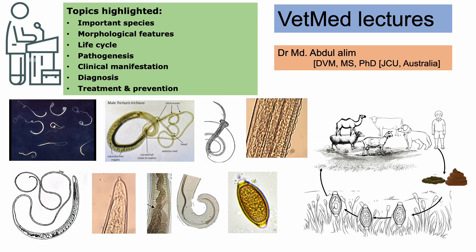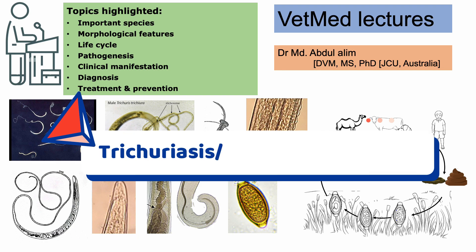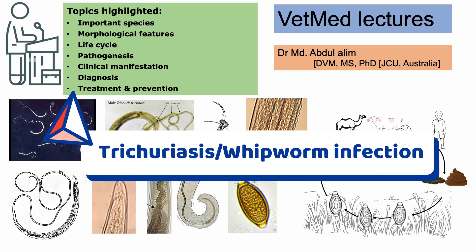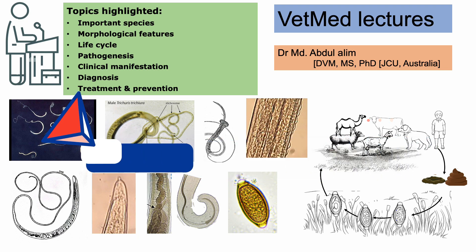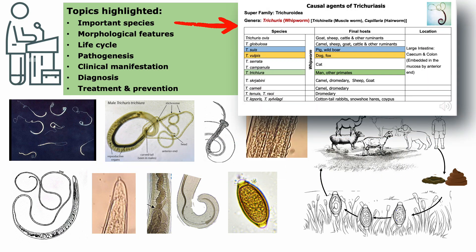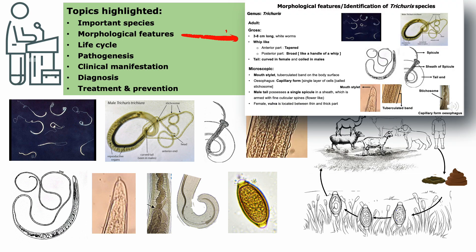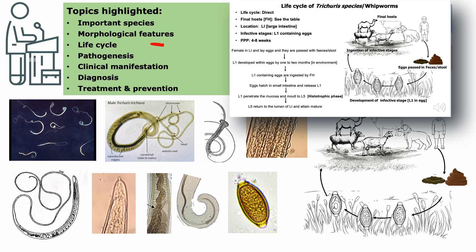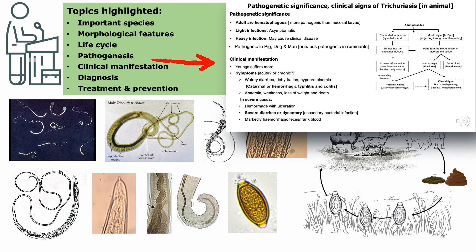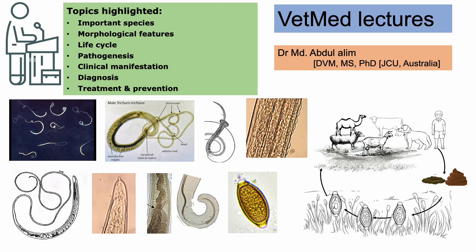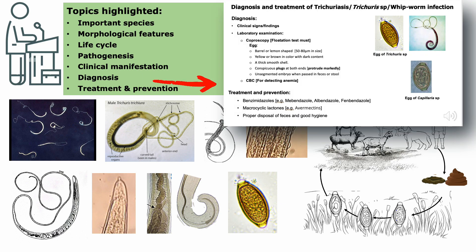Hello everyone, welcome back with another interesting video lecture on veterinary parasitology. In this lecture I'm going to discuss trichuriasis or Trichuris species or whipworm infection in animals and men. First I will highlight the causal organisms or important species, followed by morphological features, then the life cycle, pathogenic significance, and clinical manifestation in animals and men. Finally I will highlight the diagnosis, treatment, and prevention of trichuriasis or whipworm infection.